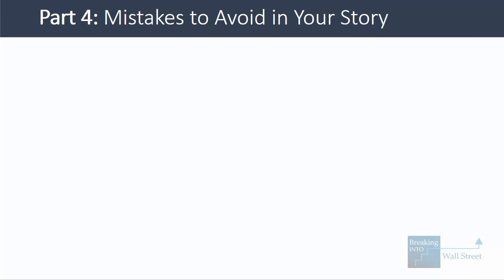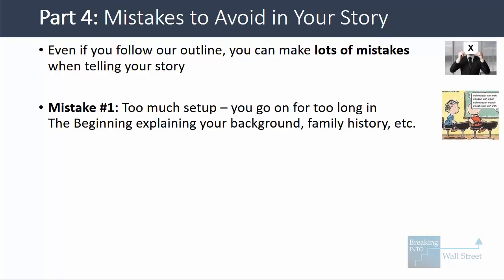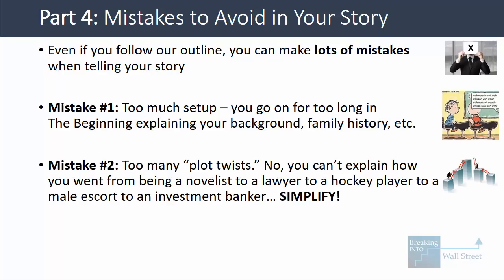Now let's talk about some mistakes to avoid in your story. First, don't spend too much time on the beginning — don't go into your family history or why you picked every class in university. It's way too long and will make your story too cluttered. Second, don't give too many plot twists — don't talk about how you transitioned from being a novelist to a lawyer to a hockey player to a male escort to an investment banker. Simplify it down to two or three transitions at the most.